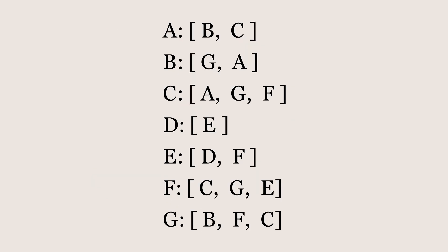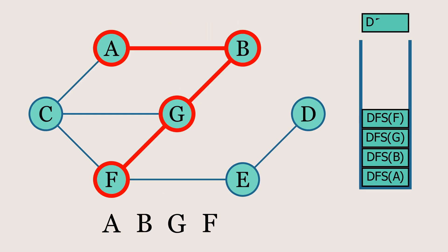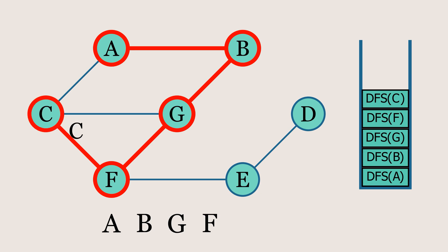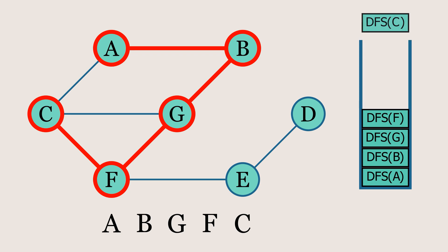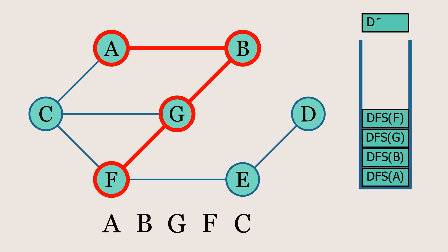Looking at node F, we see that node C comes before node E in its adjacency list. So our next move will be to visit node C. Now that all the neighbors of node C have been visited, the algorithm will backtrack from here. We'll return to node F and move to its other neighbor, which is node E.